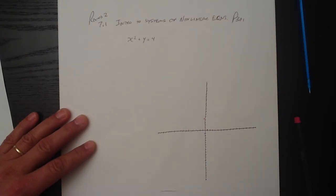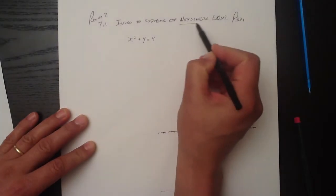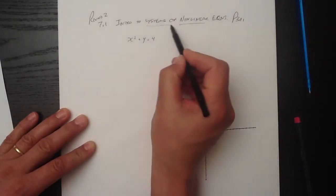that quadratic is going to be graphed as a curve. It's not going to be a straight line. So a system of equations that involves one of these, something with a curve, is known as a nonlinear equation or a system of nonlinear equations.